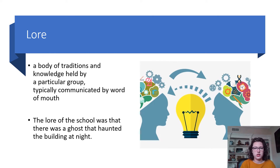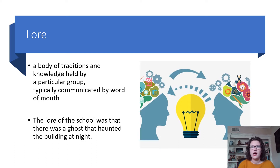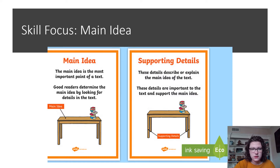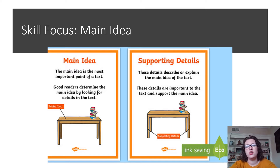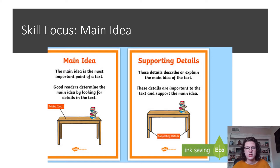Lore is a body of traditions and knowledge held by a particular group, typically communicated by word of mouth. Example: The lore of the school was that there was a ghost that haunted the building at night. Our skill focus for today is main idea — the most important point of a text. Good readers determine the main idea by looking for details; those supporting details describe or explain it. Think of it as a table: the top is your main idea, but it can't hold up without the legs, which are your supporting details.